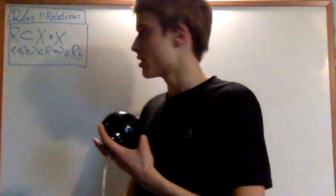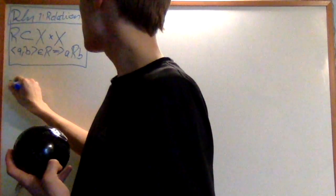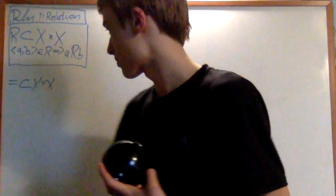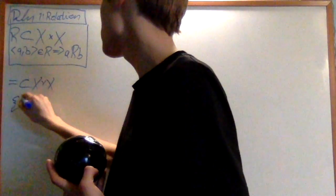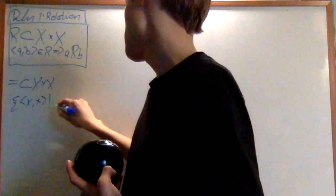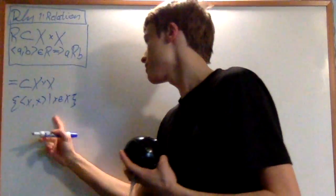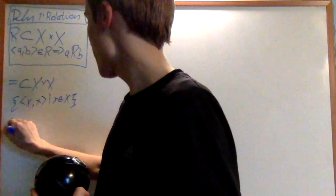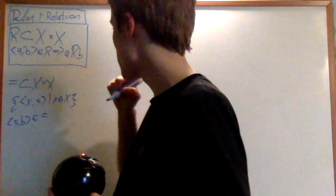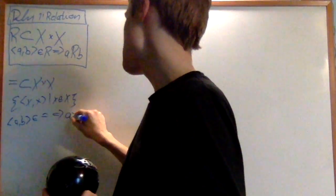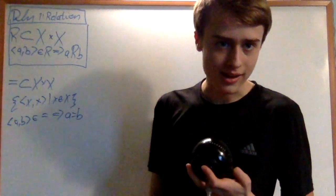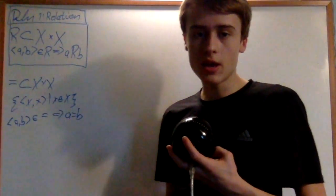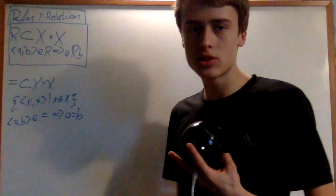And what we do is we say that if a pair (a,b) is an element of R, we will write this as aRb. So for example, what about equals? The equals subset is going to be a subset of X cross X, equal to the set of (x,x) for x in X. This is the equals relation, because if I have (a,b) an element of the equals relation, this just means that a is equal to b. So that's the idea behind a relation.